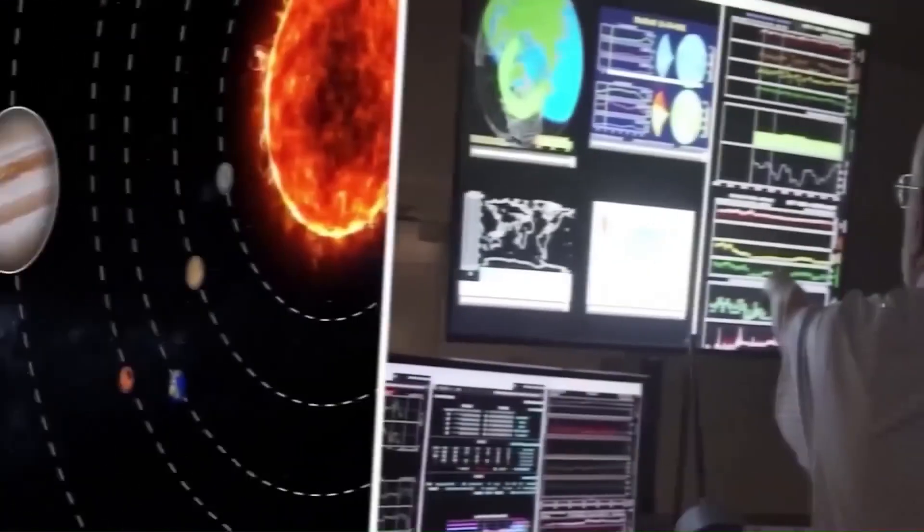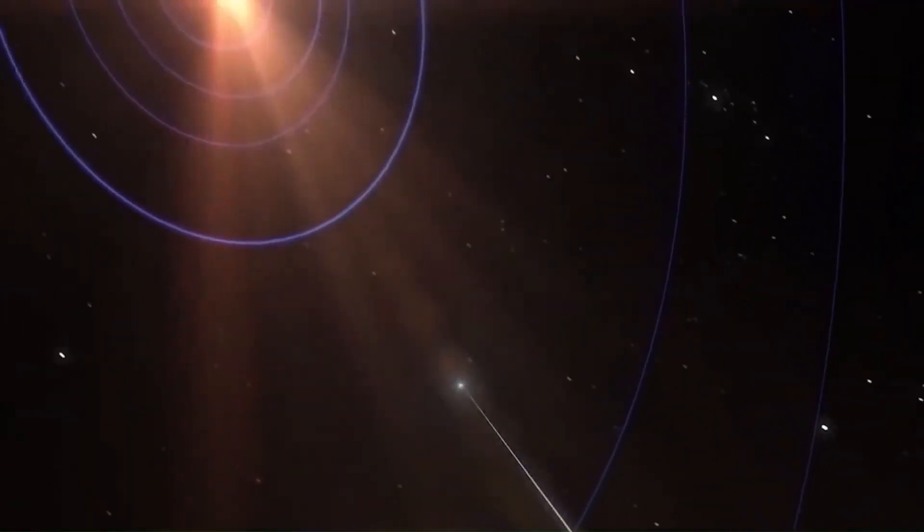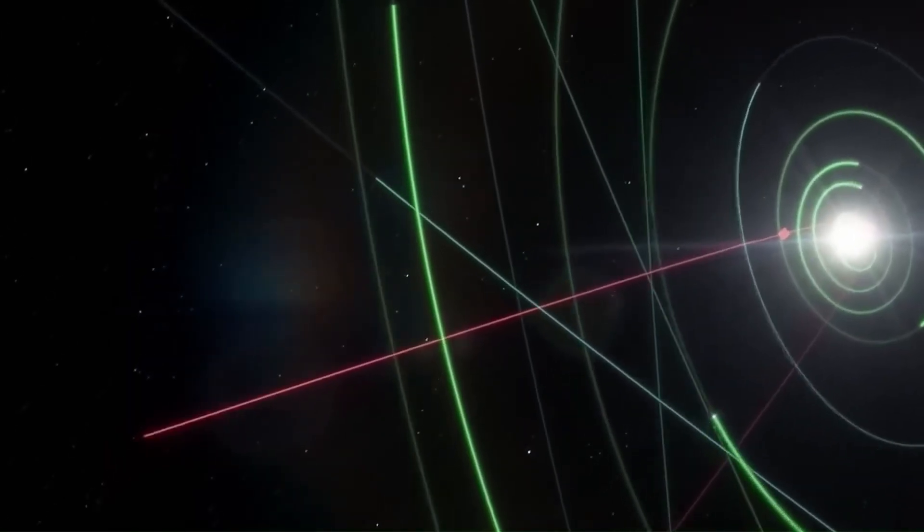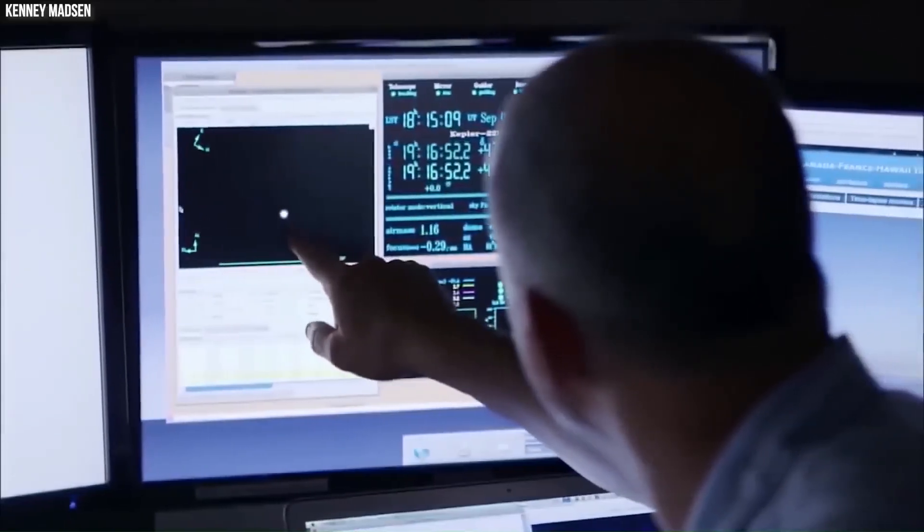Some have even suggested that extraterrestrials are controlling the amount of light and heat the Earth gets from the Sun, and that is why we have seen numerous sightings of UFOs hanging around our Sun. According to these people, this video from the Solar Heliospheric Observatory satellite appears to show evidence of extraterrestrials using the Sun. However, we do not know for certain whether this is the case.